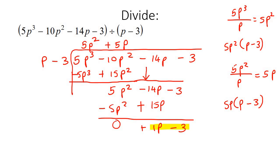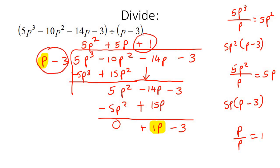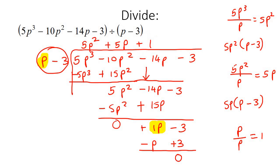We start the process once more. The highest power in this part is p, and in the divisor it's also p, so p divided by p is 1. We write plus 1 at the top, multiply it with p minus 3 to get p take away 3, switch the signs, and then add — everything gives 0 as the remainder. In this lesson we're looking at questions with a 0 remainder. The final answer is written at the top.